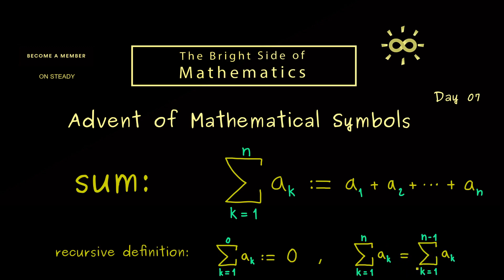If we have this sum from k is equal to 1 to n-1, we just have to add the last term to get this sum. And then you see, this is our recursive definition for the SUM symbol.